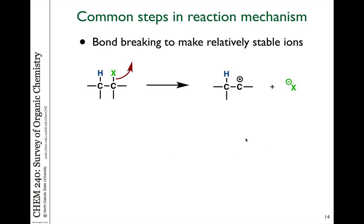In later chapters we'll see examples of bonds that simply break — usually when we can form relatively stable ions. In this case, a carbon-halogen bond breaks in a heterolytic fashion: the halogen retains the electrons that were in the bond, leaving the carbon with a plus charge. This is a common step in some substitution reactions and in other reactions we'll see later.